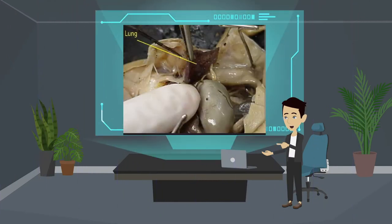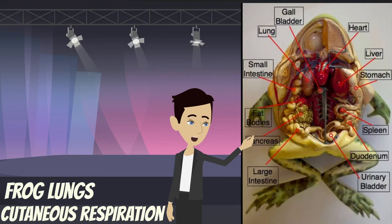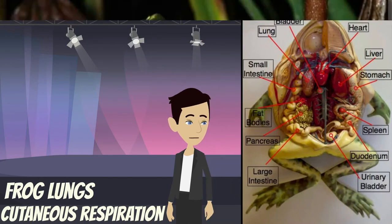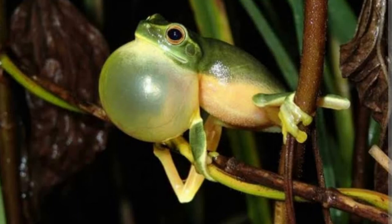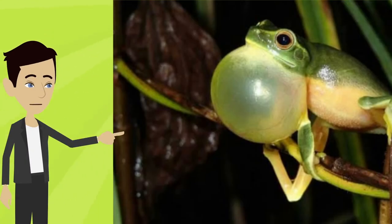First, let's talk about the lungs of frogs. Like most animals, frogs have lungs that they use to breathe air. However, frogs have a unique lung structure that allows them to take in air through their skin as well as their lungs.